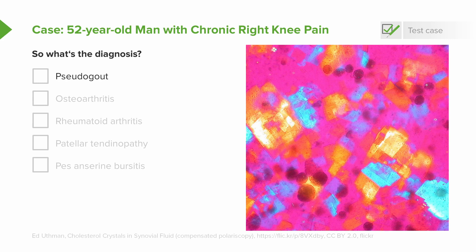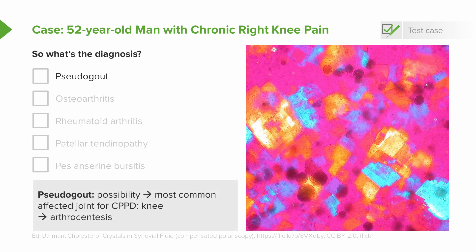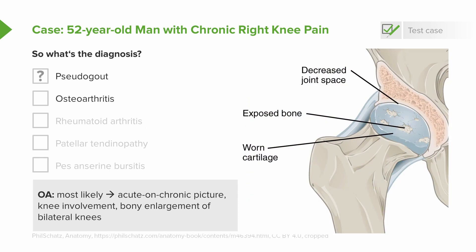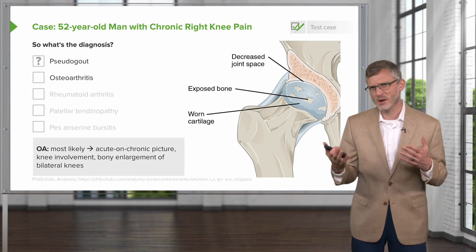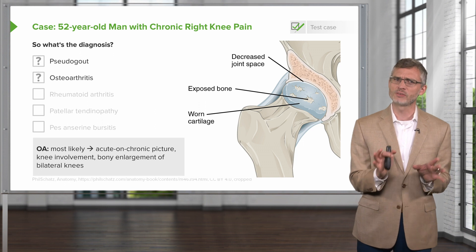With that history in mind, what is the most likely diagnosis? Let's start with pseudogout, also known as CPPD — calcium pyrophosphate deposition — a relatively common type of crystalline arthropathy. Importantly, the most common joint affected in CPPD is the knee. We'd want to ask about common risk factors like hyperparathyroidism, hemochromatosis, hypomagnesemia, or hypophosphatemia. Only arthrocentesis will really help us include or exclude that diagnosis. As for osteoarthritis, it's the most likely diagnosis because it's the most common cause of pain. It can have an acute on chronic picture, knee involvement is very common, and the description of bony enlargement of the bilateral knees leads us toward that diagnosis — though the effusion issue leaves a question mark.